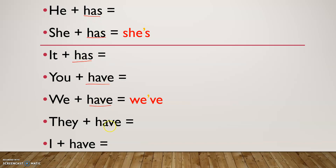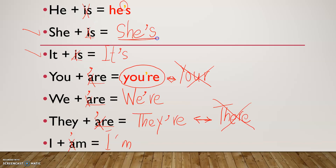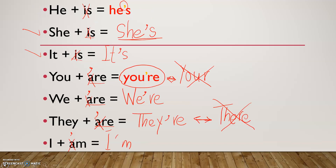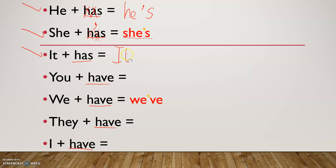Now let's look at has and have. He has, she has, it has. She has is already solved: they crossed A and H and replaced them with an apostrophe — she's. Two letters are crossed this time. He has: in 'has', we cross A and H, giving us he's. It has: also it's. Notice she's and he's look the same whether the verb is 'is' or 'has'.